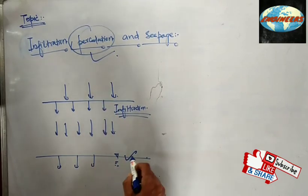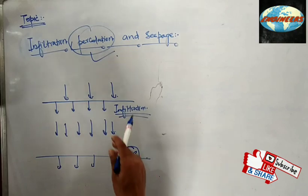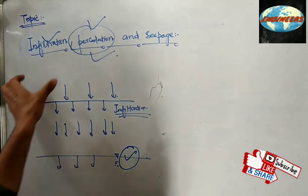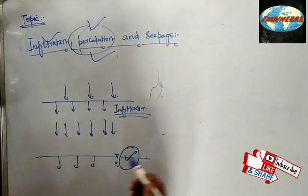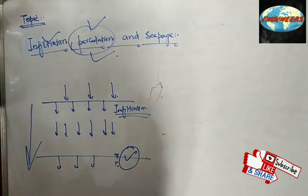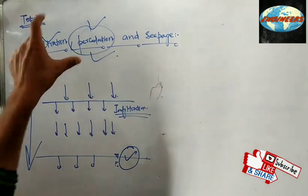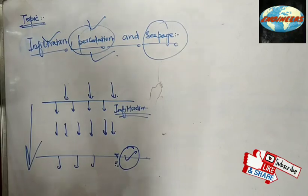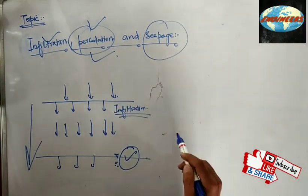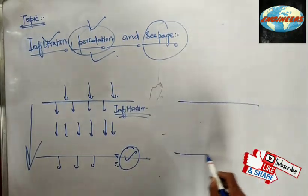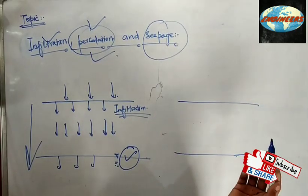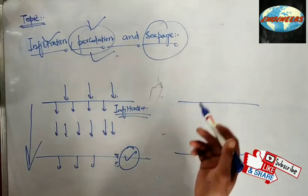Inside the earth, when this water moves vertically downwards and joins a water table, that is called percolation. Both infiltration and percolation occur only due to gravity, so there can only be vertical direction of movement. Now, seepage is very different — seepage is the movement of water inside the soil due to pressure difference, and because of that it can be vertical or horizontal.